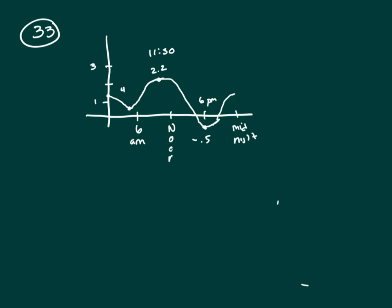We want to find the difference in feet between the heights of the highest and lowest tides. Your highest is here at 2.2 and your lowest is here at negative 0.5.